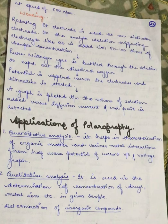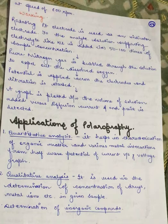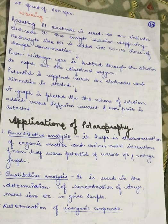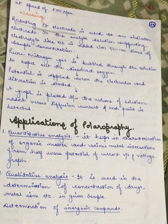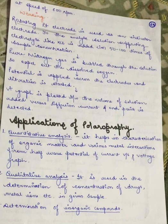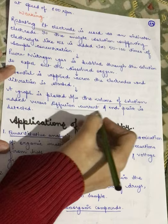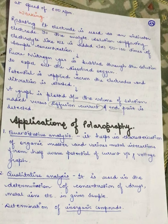In working with the rotating platinum electrode, it is used as the indicator electrode. To the analyte solution, a supporting electrolyte like potassium chloride is added at 50 to 100 times the sample concentration. Pure nitrogen gas is bubbled through the solution to expel dissolved oxygen. Potential is then applied across the electrodes and the titration is started.